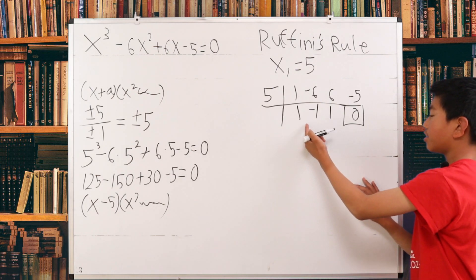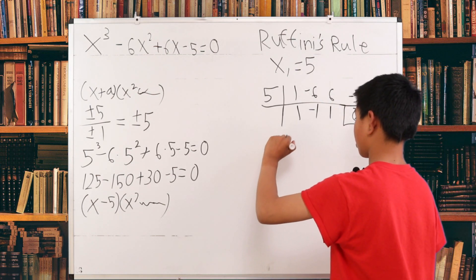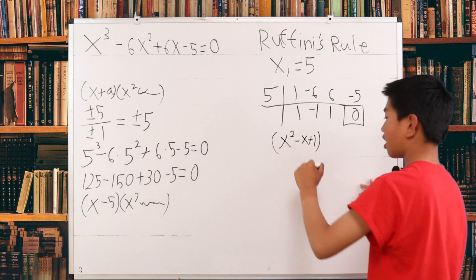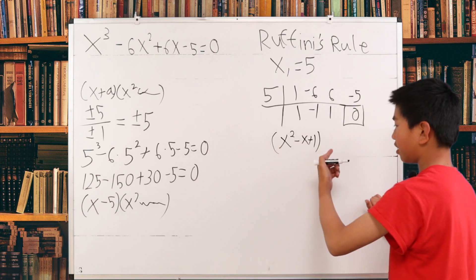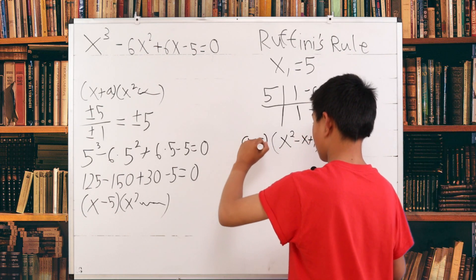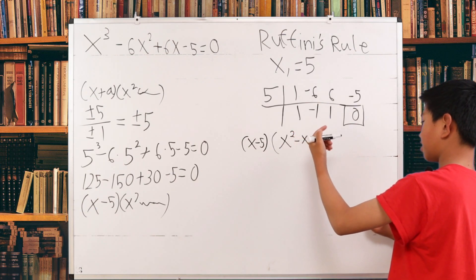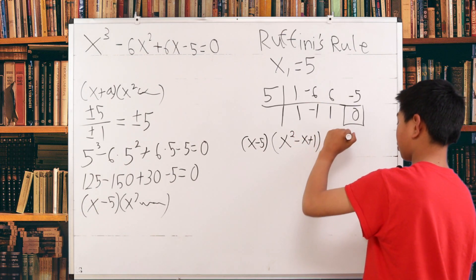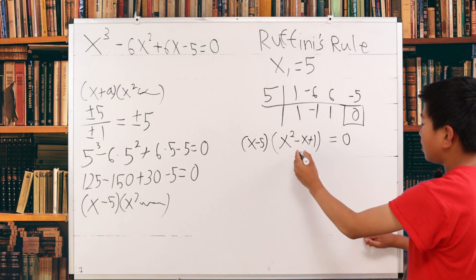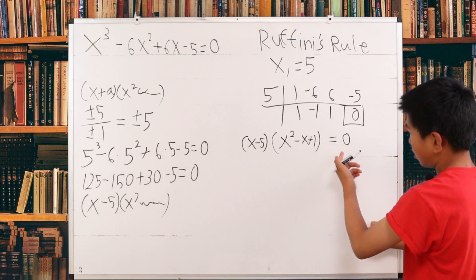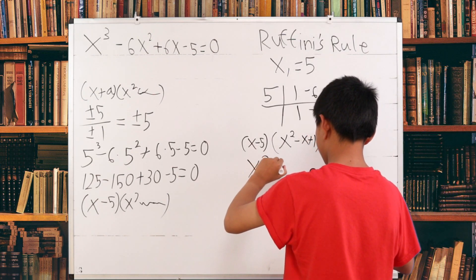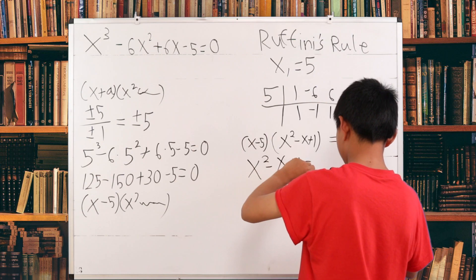The quadratic part is x squared minus x plus 1. So the original equation is now x minus 5 times x squared minus x plus 1 equals 0. We already have x₁ equals 5. For the remaining factor, we set x squared minus x plus 1 equal to 0 and solve.